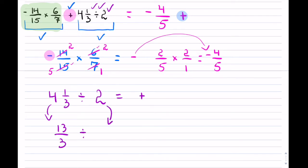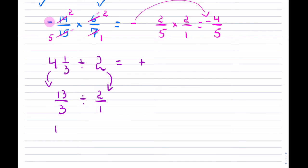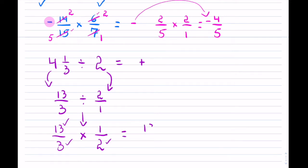And 2 — this one is a little bit easier — it's 2 over 1. So now the division: 13 over 3, this changes to multiplication, and then it is 1 over 2. Can I reduce? Unfortunately I cannot — 13 is prime, 3 is prime, 2 is prime, and they do not go into each other. So I have 13 over 6.